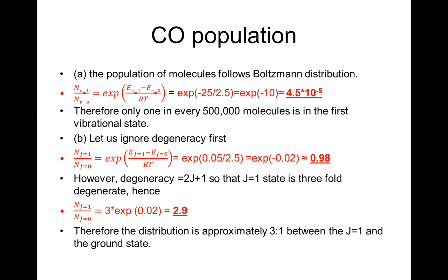Question 2: The population of molecules follows a Boltzmann distribution. The ratio Nv₁/Nv₀ equals exponential of (Ev₁ minus Ev₀) over kT, which equals exponential of minus 25 over 2.5, equals exponential of minus 10, which is 4.5 × 10⁻⁵. Therefore only one in every 500,000 molecules is in the first vibrational state. For the rotational case, Nj₌₁/Nj₌₀ equals exponential of (Ej₌₁ minus Ej₌₀) over kT, and substituting we find this equals 0.98. With the degeneracy factor 2j+1, the population ratio for j equals 1 is 0.98.